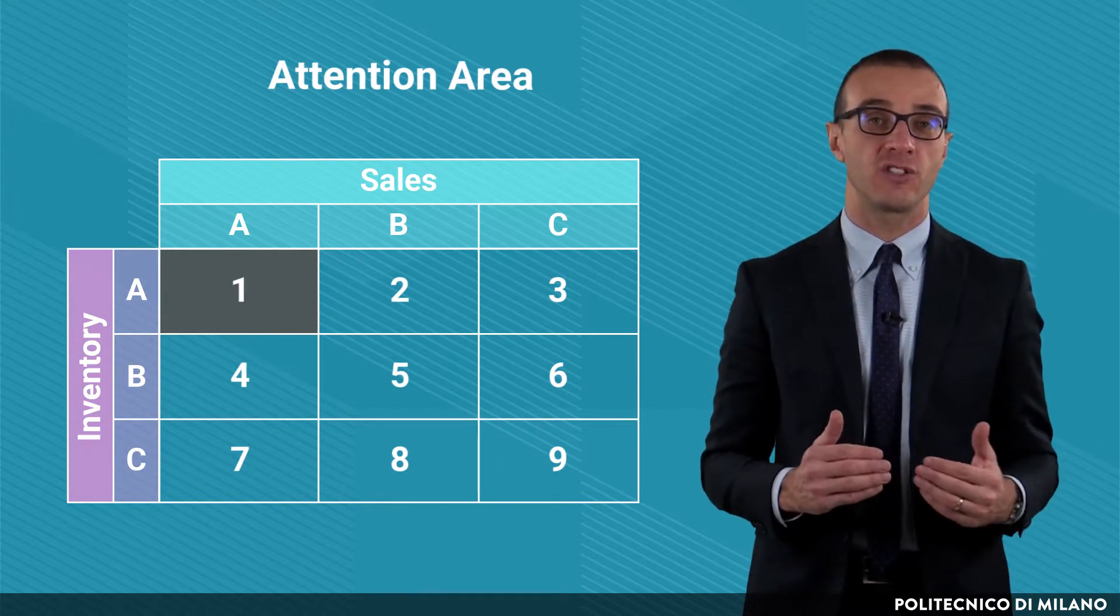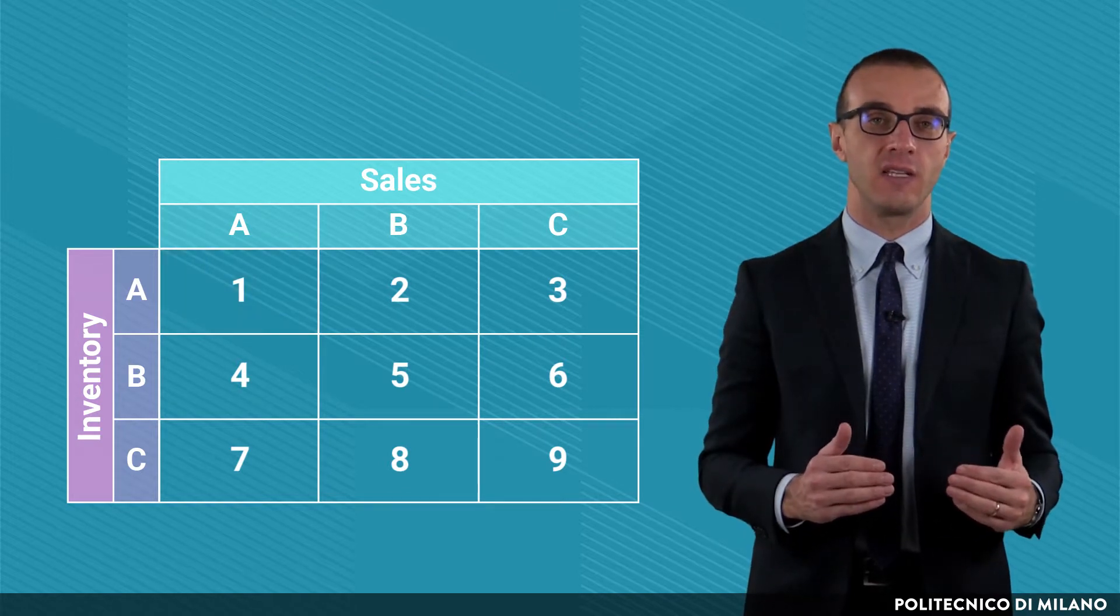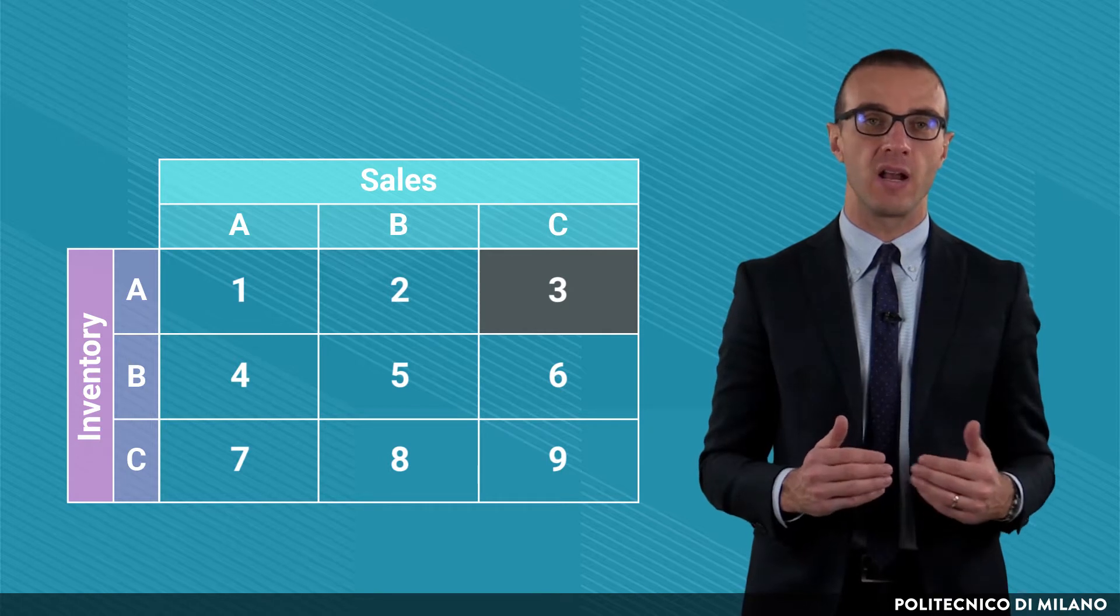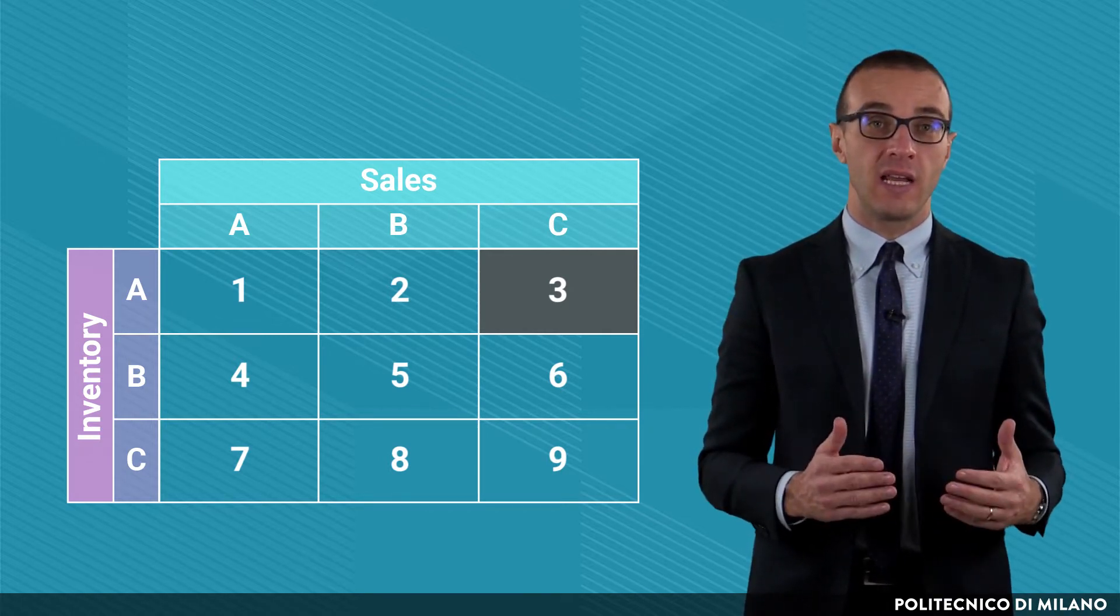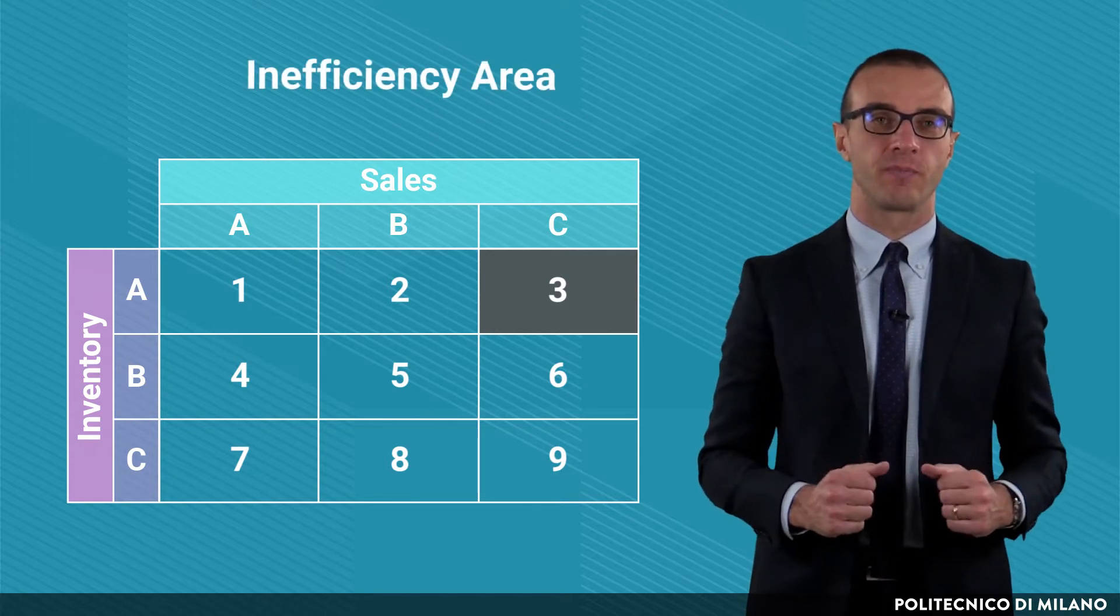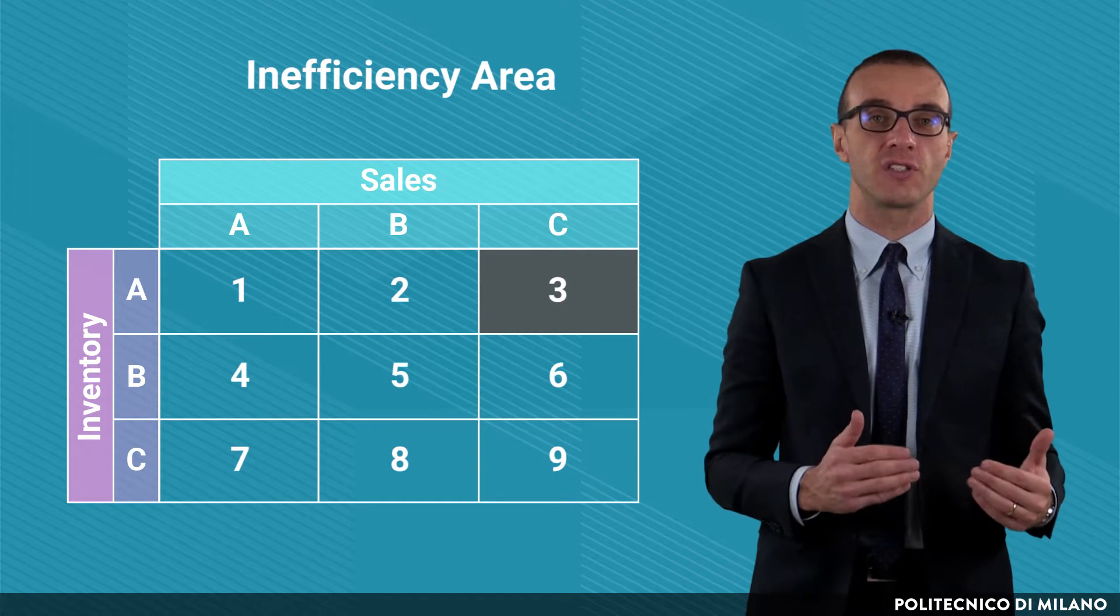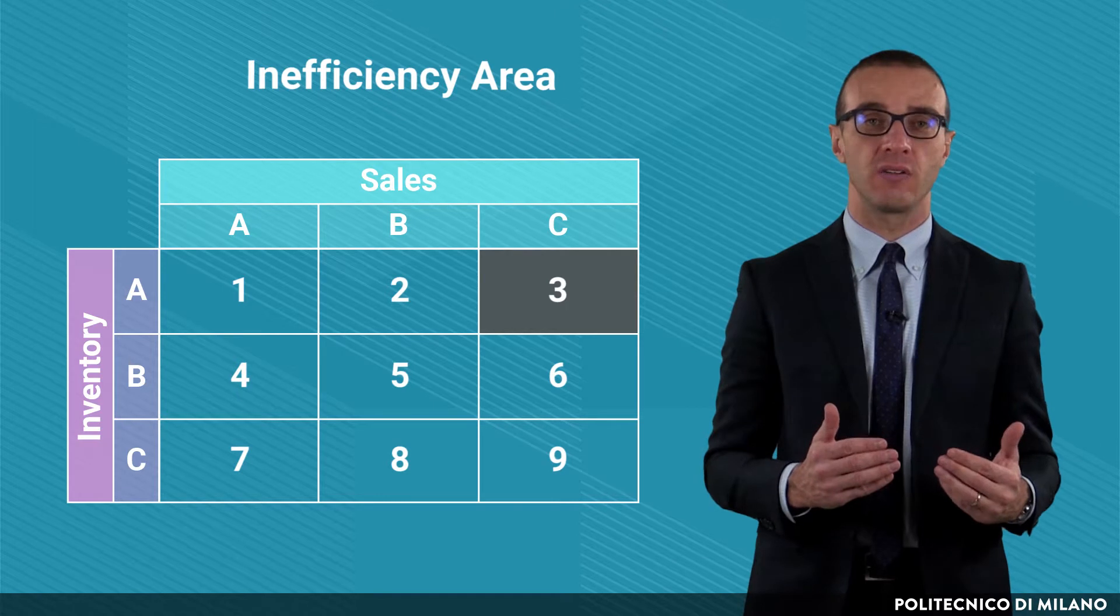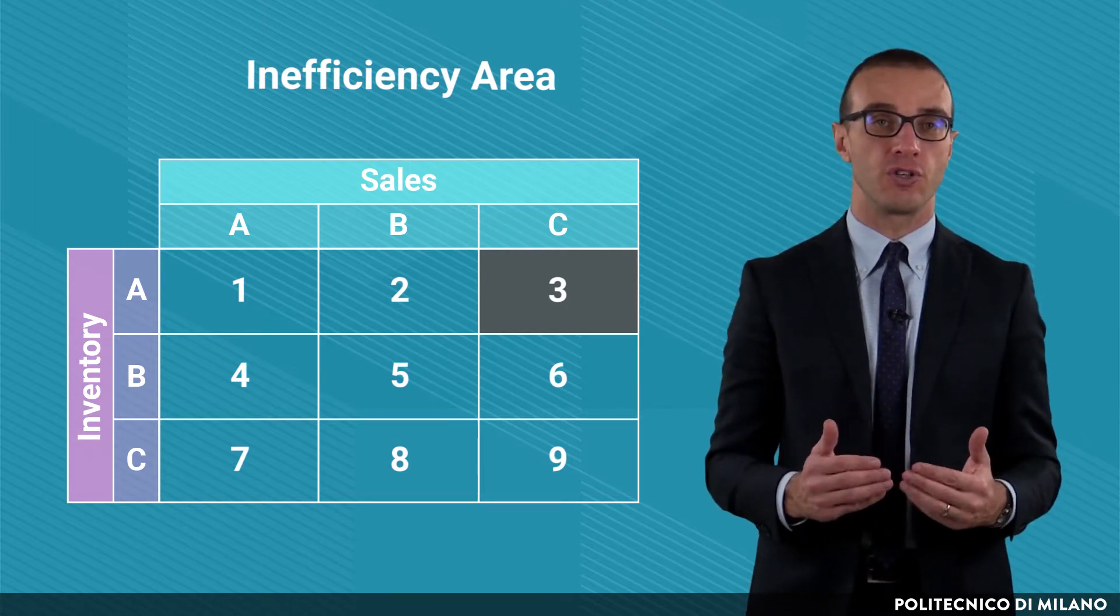The second significant case is the one of the CA items which are characterized by low sales and high inventories. Indeed, the area is called inefficiency area. In this situation, it is not enough to wait until the stocks are used, but it might be necessary to reduce them, for example stopping the replenishment and the production, or pushing sales through promotions.